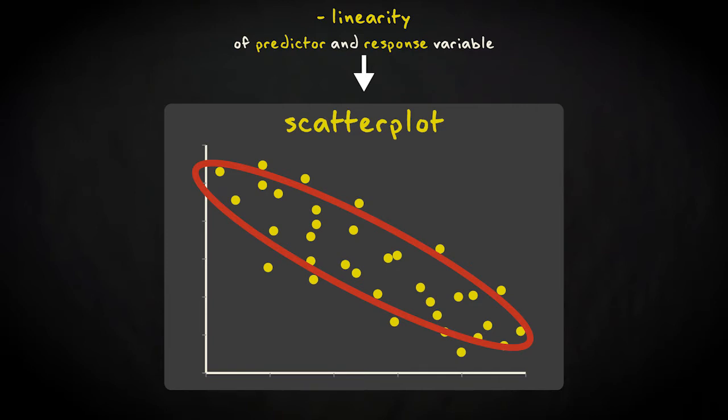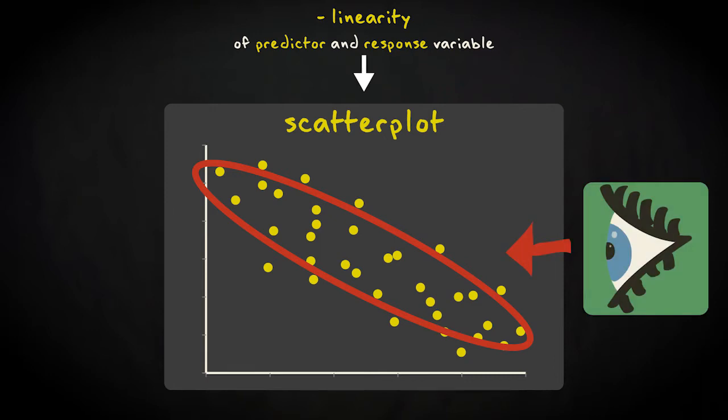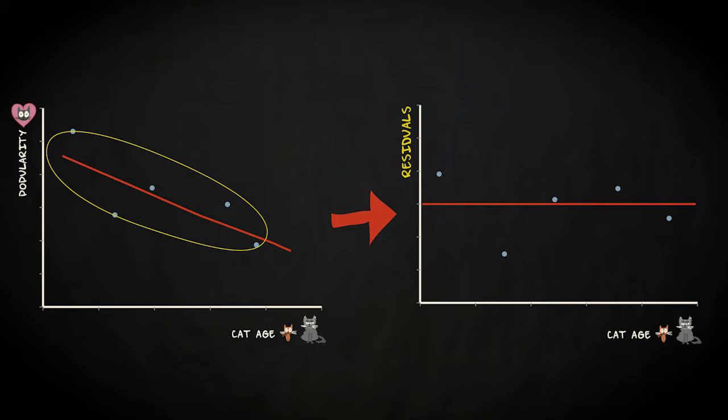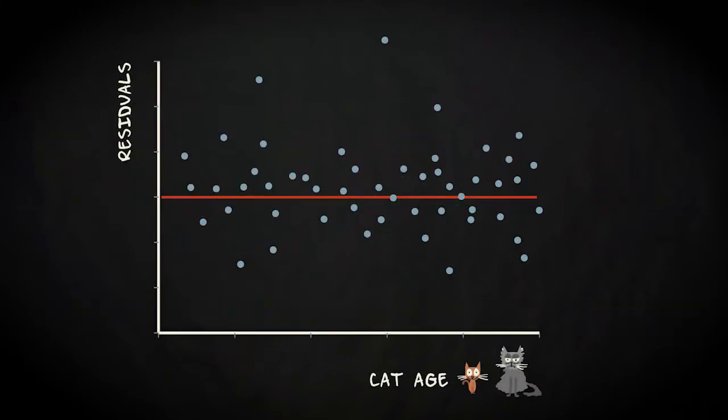Determining whether the assumption holds is subjective. It comes down to eyeballing the plot. Unfortunately, scatter plots can be ambiguous. Sometimes it helps to plot the residuals against the predictor, or predicted values, to get a clearer picture. The residuals should be scattered around the value zero, with more extreme residuals becoming less frequent, and the variability should be the same for all values of the predictor.